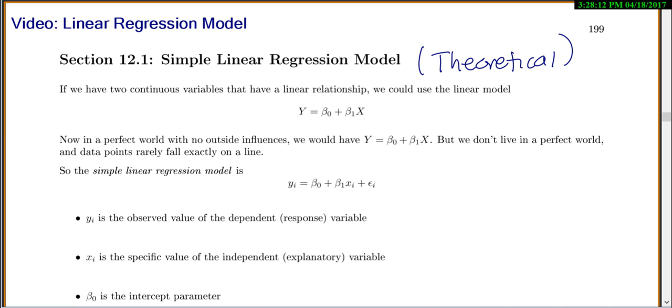So if we have two continuous variables that have a linear relationship, we could use this linear model where we say y is going to be equal to some beta 0 plus beta 1 x. Now, this is just a basic line. If you remember from your math classes, y equals mx plus b, where this is your slope and this is your y-intercept.